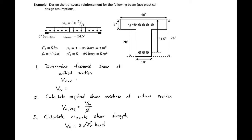In this example problem we're going to be designing the transverse reinforcement for the following beam using practical design assumptions. This means we're going to have a consistent spacing of our transverse steel along the length of the beam, and we're going to use the ACI simplified equation to find our concrete shear strength.